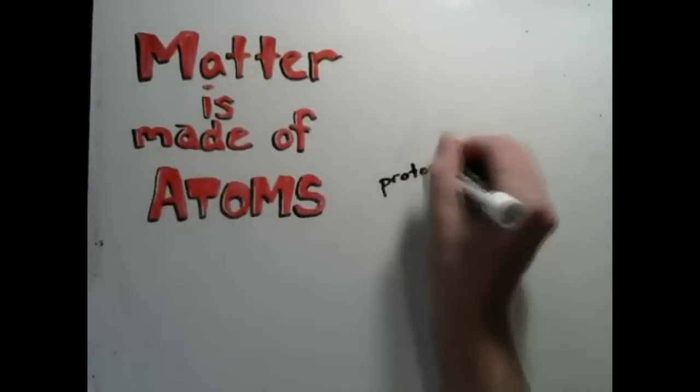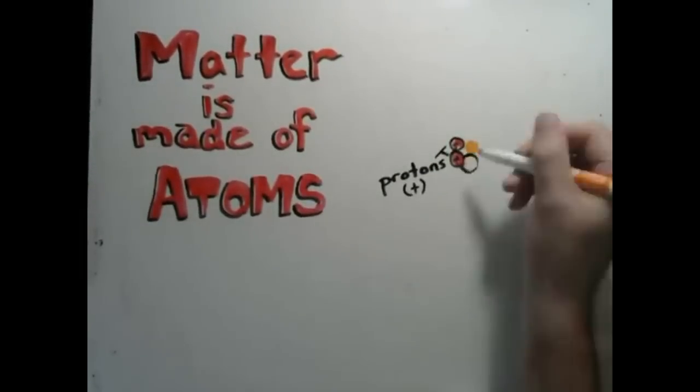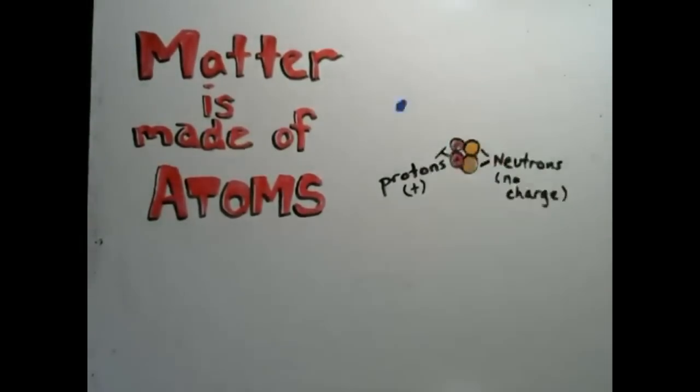Now, atoms have three parts: protons (they have a positive charge), neutrons (they have no charge at all), and electrons are bouncing around everywhere and they have a negative charge.